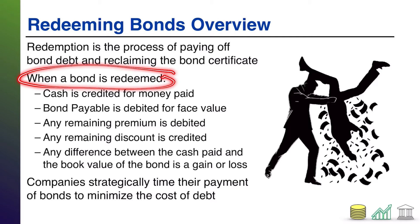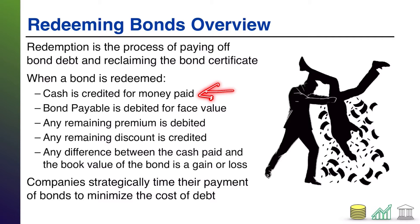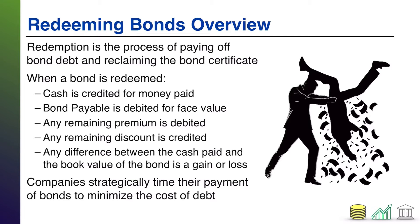When the bond is redeemed — and this is in general, not just at maturity — you are going to credit cash because you are paying off the face value of that bond to investors. You are going to debit the bond payable because bond payable represents the face value of the bond to investors. If there is a remaining premium or a remaining discount on the bond you are getting rid of, you will either debit or credit that to get rid of it as well. You can't leave a premium or a discount on your books if there's no bond payable on your books.